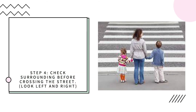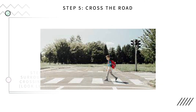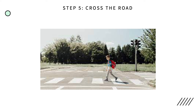After the walk sign appears, you should check all surroundings. You can do this by looking for oncoming cars and looking both ways before crossing the road. After you have checked your surroundings and the walk sign is present, you may safely cross the road by walking in between the marked crosswalk lines.